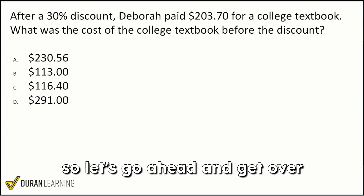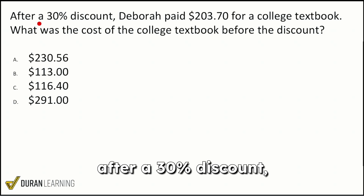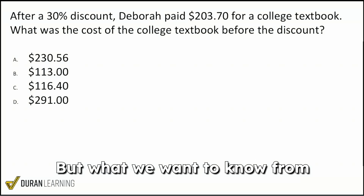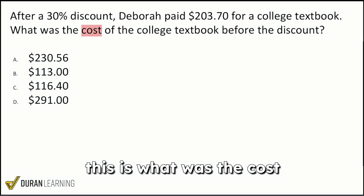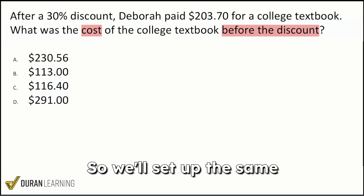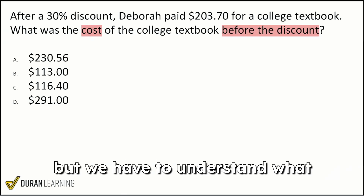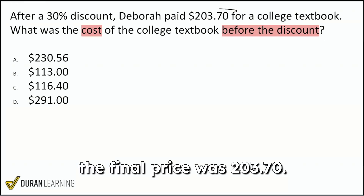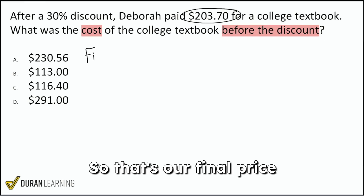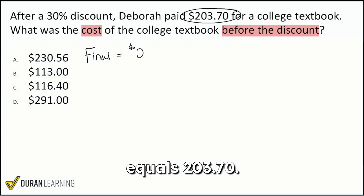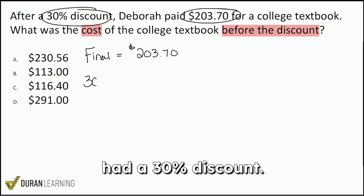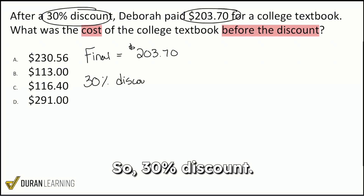Let's get to this second problem. After a 30% discount, Deborah paid $203.70 for a textbook. What we want to know is: what was the cost before the discount? We'll set up the same equation in the same way, but we have to understand what belongs where. The final price was $203.70, and we had a 30% discount.